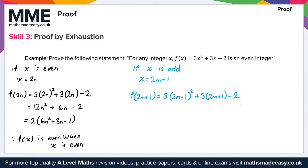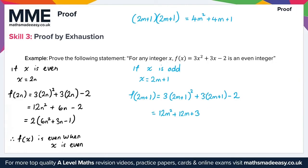We simplify the right-hand side. Expanding (2m + 1)² gives 4m² + 4m + 1. Multiplying by 3 gives 12m² + 12m + 3. Then 3(2m + 1) gives 6m + 3. Combining: 12m² + 12m + 6m + 3 + 3 − 2 = 12m² + 18m + 4.